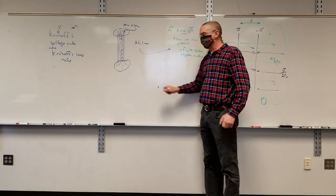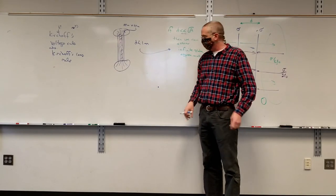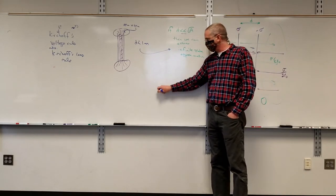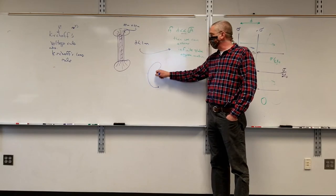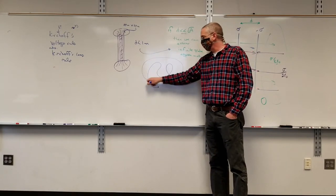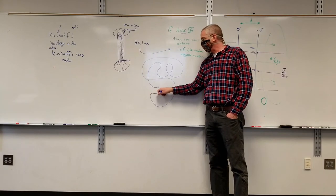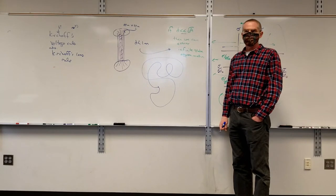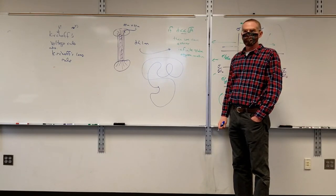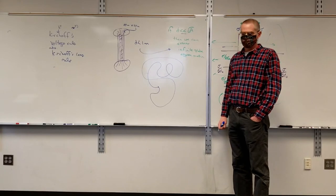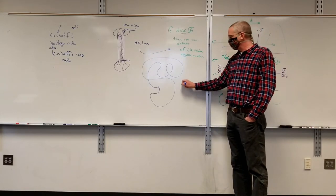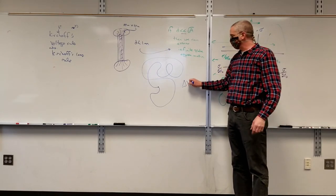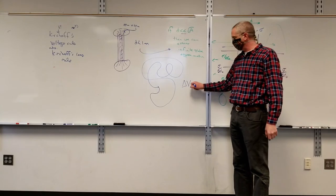The essence of it is that the electric potential difference is path-independent. If I take a point here, there's some electrical potential at this point. If I go on some journey around some path and end up back where I started, what is the difference in the electric potential from the beginning to the end? Zero. So if I come back to the same point, the voltage or potential difference between that point and itself is zero.